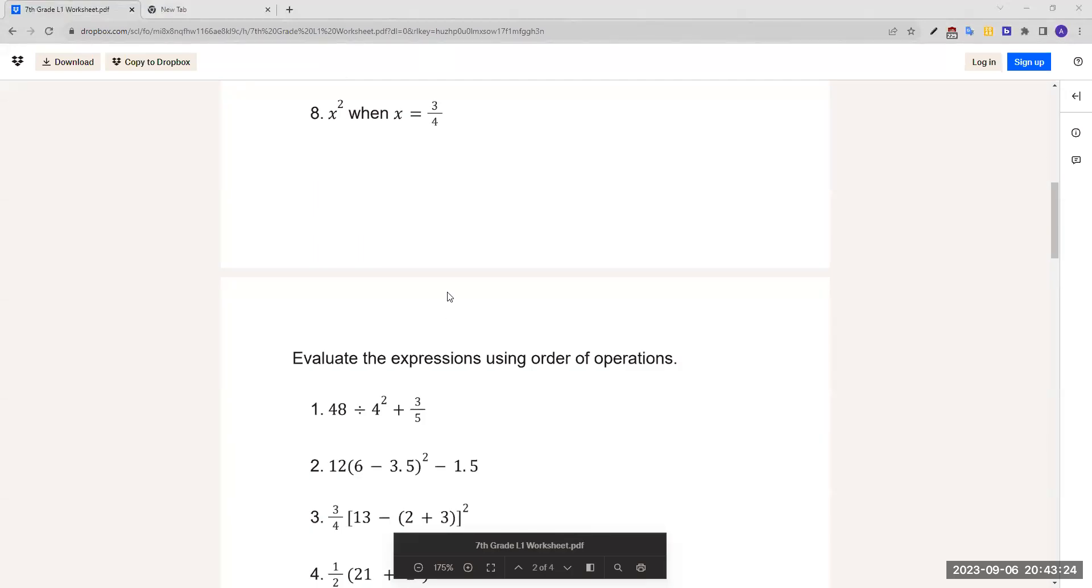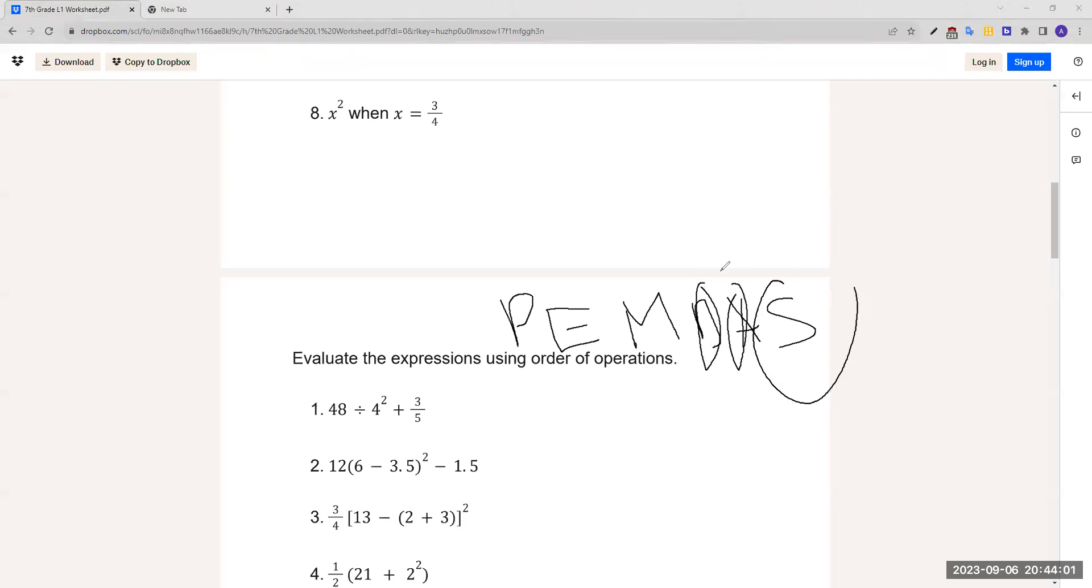Next, we have evaluate the expressions using order of operations. The order of operations, we can remember it by using the expression PEMDAS. P equals parentheses, E equals exponents, M equals multiplication, D is division, and A and S is addition and subtraction. This tells us the order of what to calculate. For example, you would want to divide before you add or subtract because D comes before A and S.